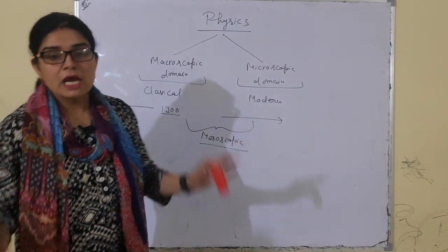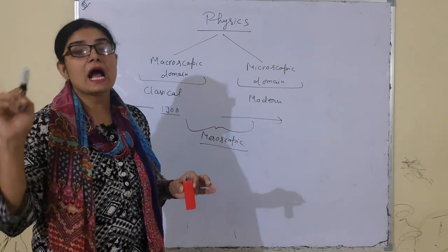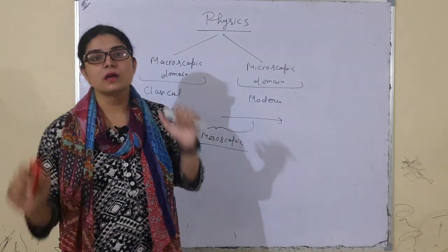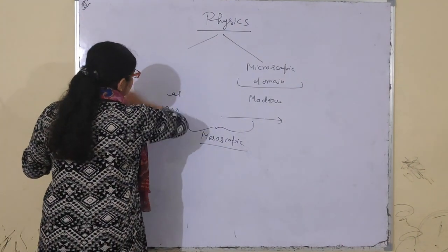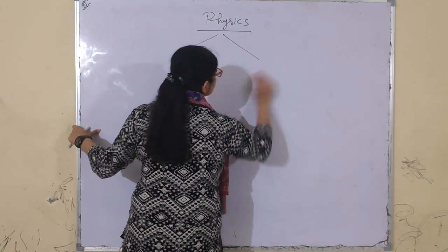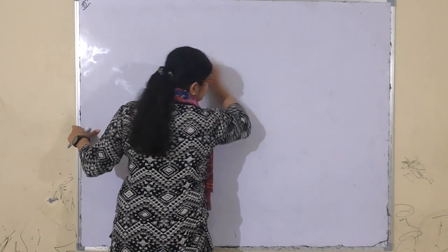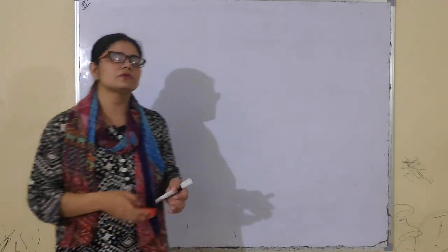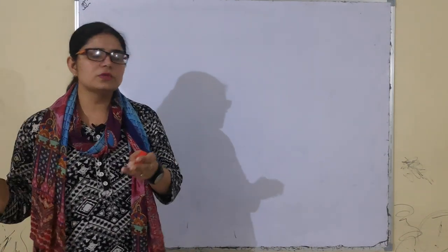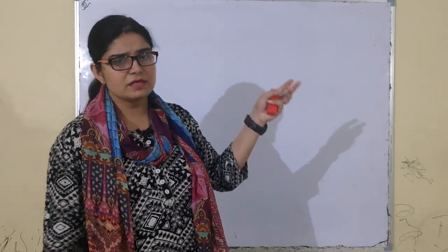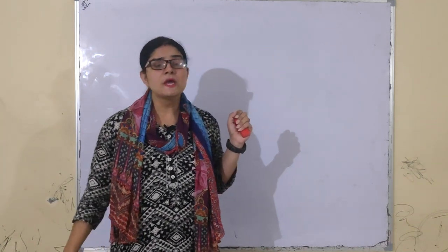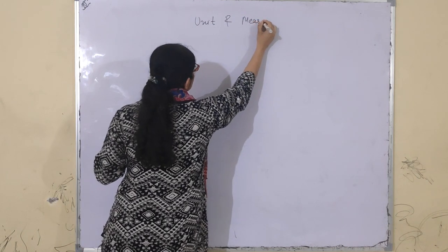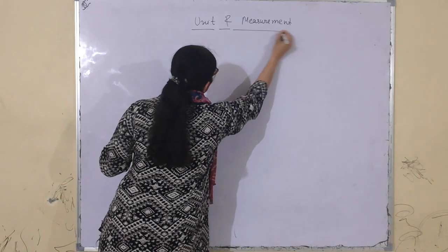Now I am going to start our syllabus. The first chapter I am going to take is Units and Measurement — that is the first chapter of 11th physics. In the NCERT book, the chapter on basic physics description is given — you just read that by yourself. It explains what forces exist in nature, how physics is related to chemistry and maths.